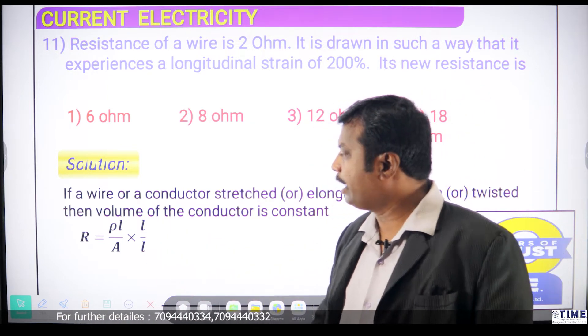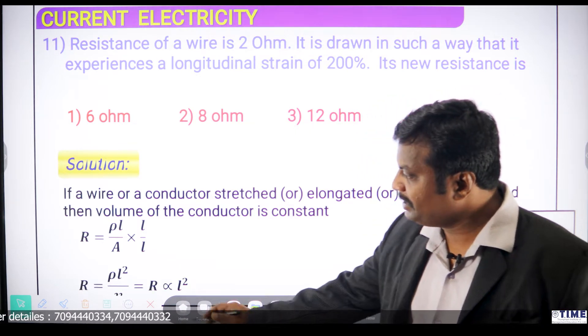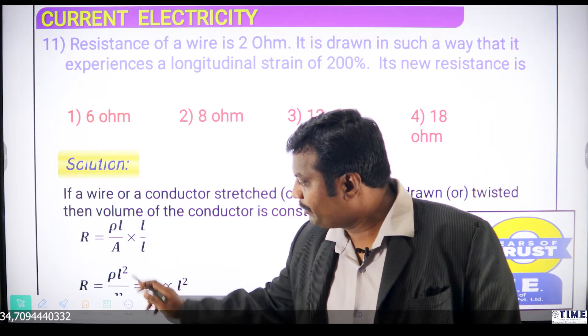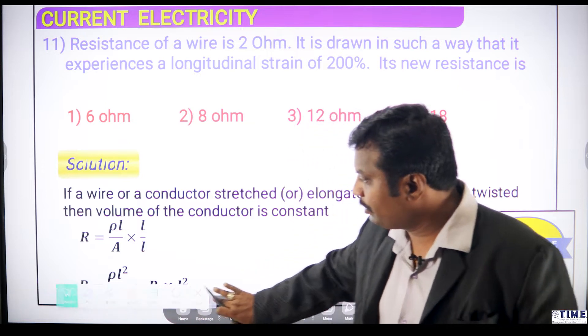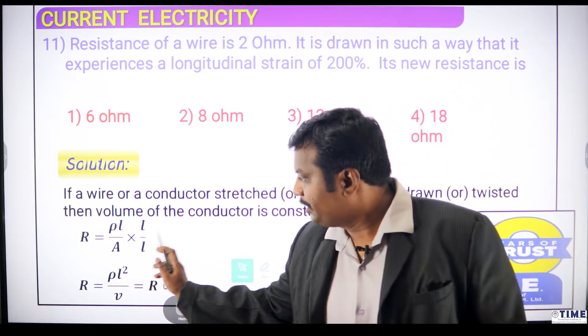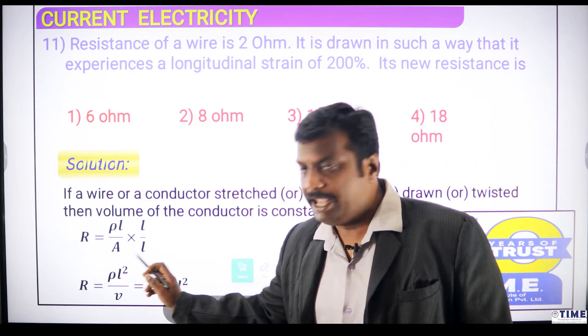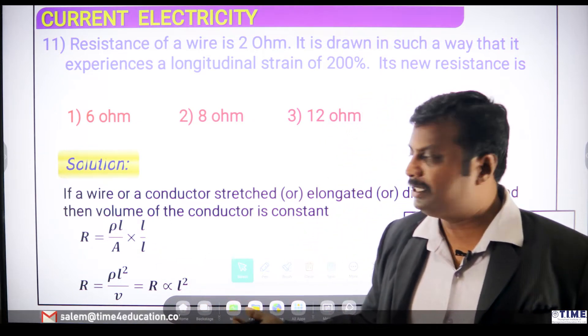Let us multiply and divide with L. What happens? R is equal to ρL into L will become L square. R is equal to ρL square divided by A into L. Area of cross-section into length is nothing but volume.